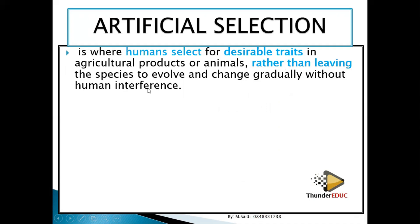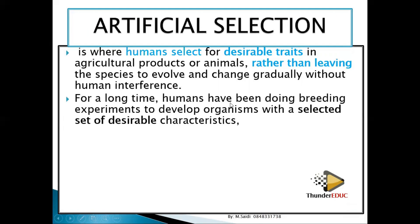In this case, humans are interfering with what is happening in the environment. For example, if I want chickens that can produce big eggs, I'll be selecting for that over a long time. Humans have been using this method during breeding experiments to develop organisms with a selected set of desirable characteristics, keeping those with desirable traits and removing those without from the system.